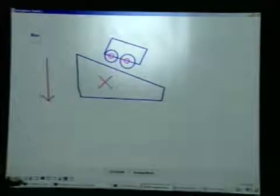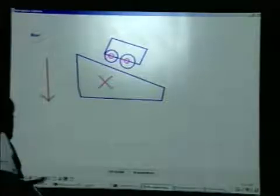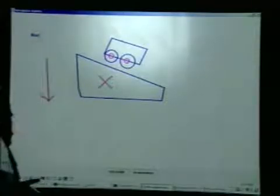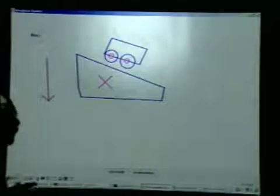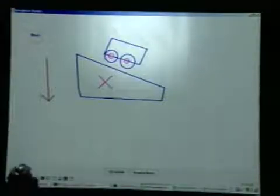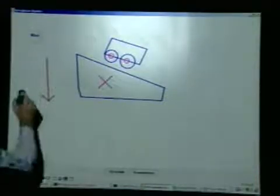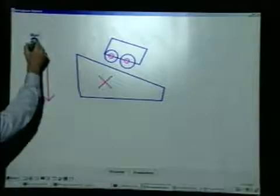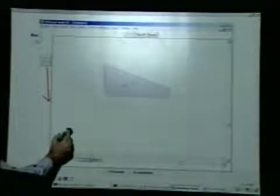Now if I'd drawn this on a piece of paper and shown it to you, you'd understand what was about to happen. I want the computer to be able to understand what's going to happen as well, so I can simply push the run button — and it produces the expected simulation.